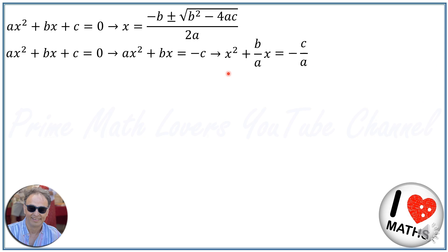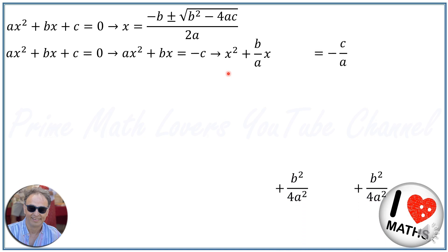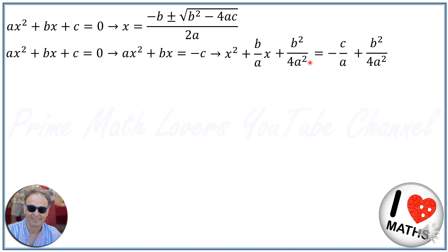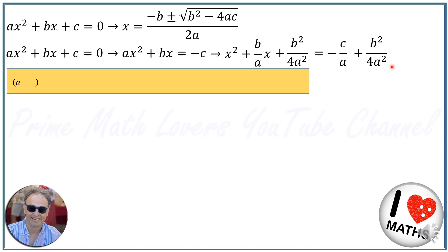Adding b squared over 4a squared to both sides, the result will be: x squared plus b over a times x plus b squared over 4a squared, is equal to minus c over a plus b squared over 4a squared.